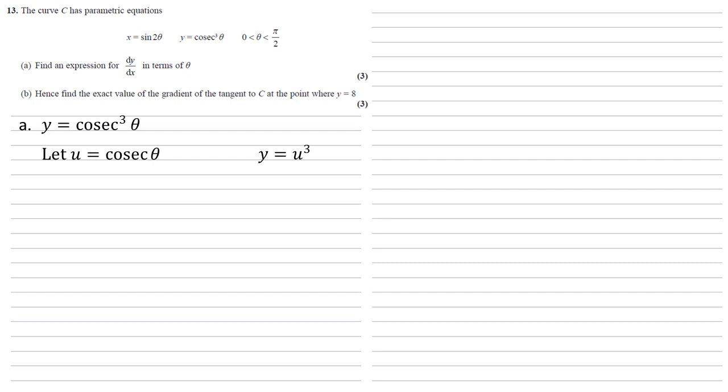If we differentiate u with respect to θ, we get the result of minus cosec θ cot θ. This is in the formula booklet given to you.